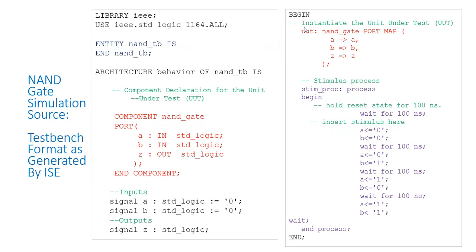We can see 'u1' — this is a user-defined label name representing a unique block. 'nand_gate' is the main module, followed by port map. The left-hand side ports are of NAND gate and the right-hand side ports are of the signals in this simulation module. NAND gate port A is connected to signal A, port B to signal B, and Z to signal Z — because we hold those port values in signals, where A and B have a starting value of zero.